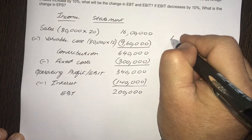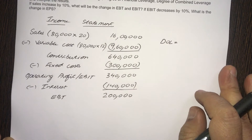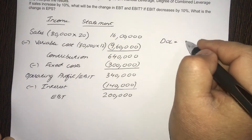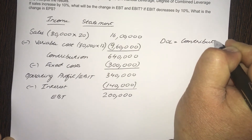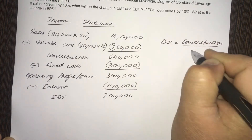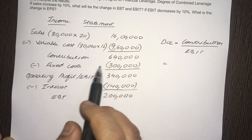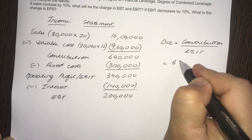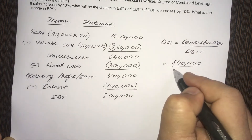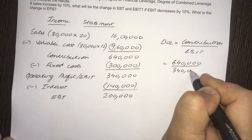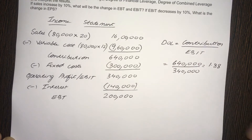Now let us calculate the DOL — degree of operating leverage. What is DOL? DOL is contribution divided by EBIT. So contribution here is 6,40,000 and EBIT is 3,40,000. The answer works out to 1.88.